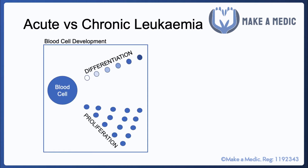There are two main processes that occur to blood cells — in this case white blood cells. One of them is differentiation. Within the bone marrow you'll start off with the stem cells, and they'll eventually differentiate and undergo multiple morphological and functional changes until you eventually end up with the fully functional mature white blood cell.